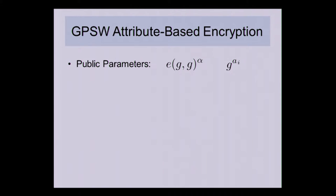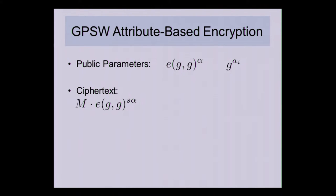The first scheme I want to look at is the classic scheme of Goyal, Pandey, Sahai, and Waters for attribute-based encryption. In this scheme the public parameters include a single target group element e(g,g)^α where α is secret, and for each attribute you want to support you choose a random exponent a_i and give out g^(a_i). To make a ciphertext you take the public e(g,g)^α and raise it to a secret random exponent s, which is used to blind the message.